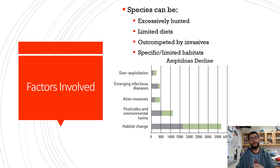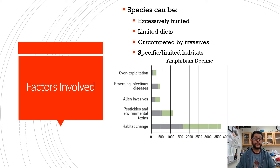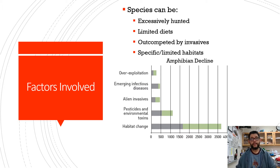Here you can see some of the causes for amphibian decline have gone up. You can see habitat change is a big one, pesticides, invasives, emerging infectious diseases — they're dealing with chytrid fungus in amphibian populations. So there are many different factors that can be involved in all this.